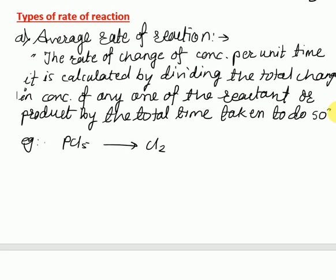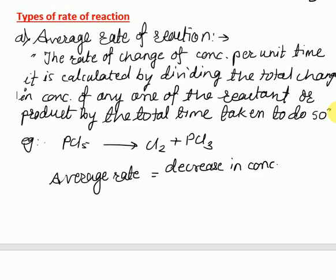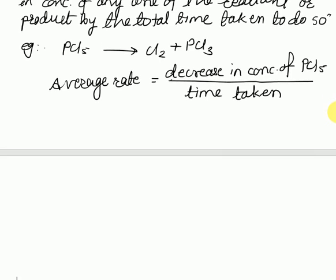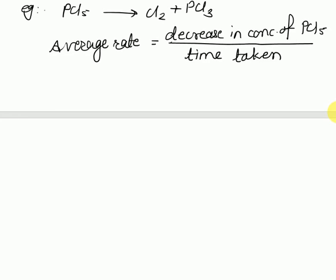For example, take the reaction: phosphorous pentachloride gives chlorine gas plus phosphorous trichloride. For this particular reaction, the average rate will be the decrease in concentration of PCl5, because it is the reactant, divided by the total time taken. It can also be expressed in terms of the increasing concentration of PCl3 and Cl2.